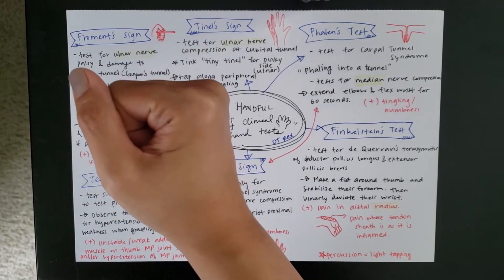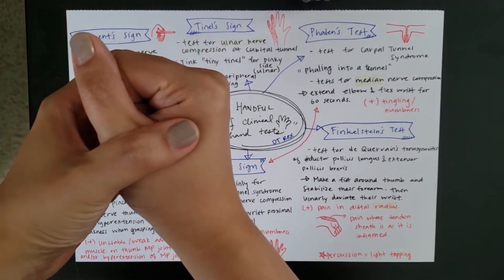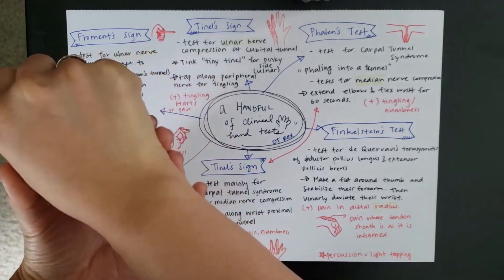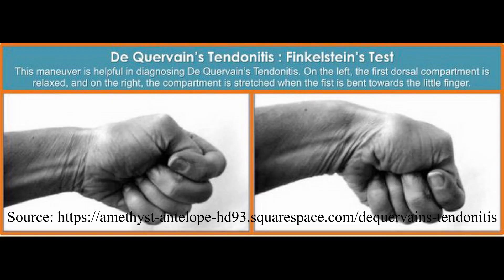You just have the person make a fist and then you're going to stabilize their forearm, which you can't see mine, and then you're going to ulnarly deviate their wrists. So, this is the ulnar side and that means that from this view, we're just going to tilt that down. And from the side, it's going to look like this.